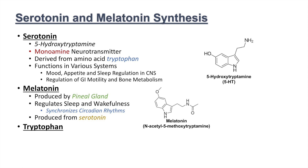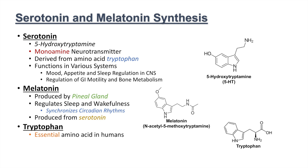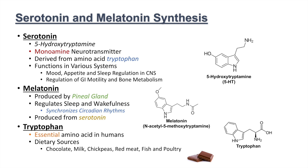Tryptophan is an amino acid, and specifically an essential amino acid in humans, meaning we have to get it from our diet. Dietary sources of tryptophan include chocolate, milk, chickpeas, red meat, fish, and poultry. Many different protein-containing foods actually contain tryptophan.